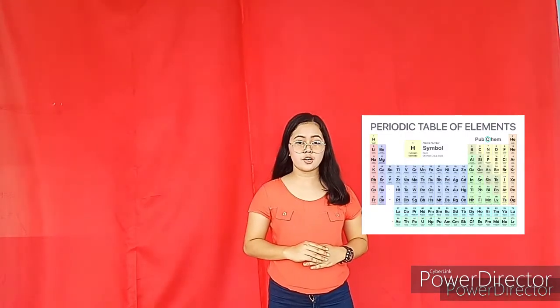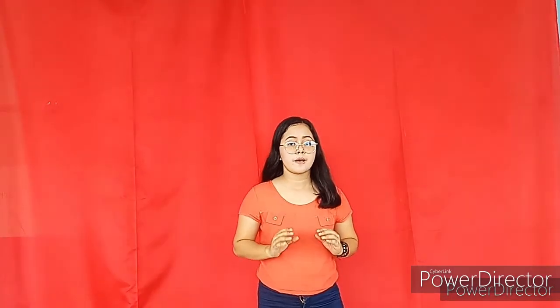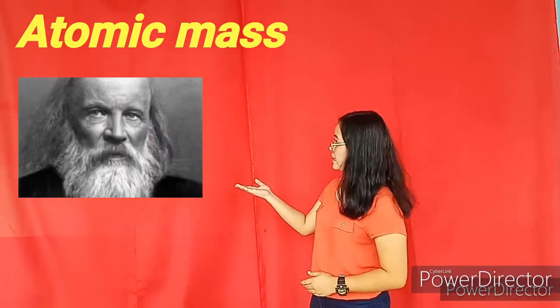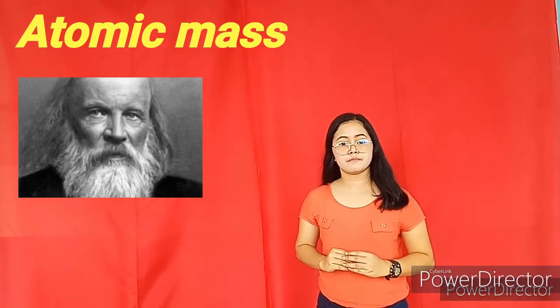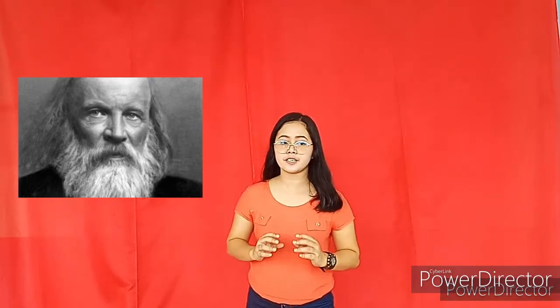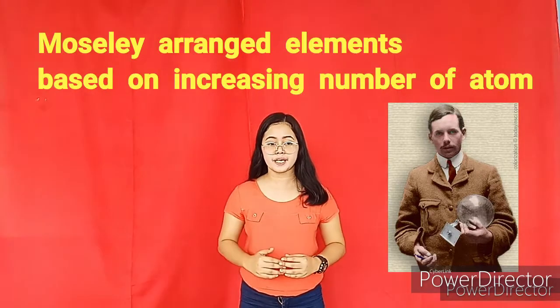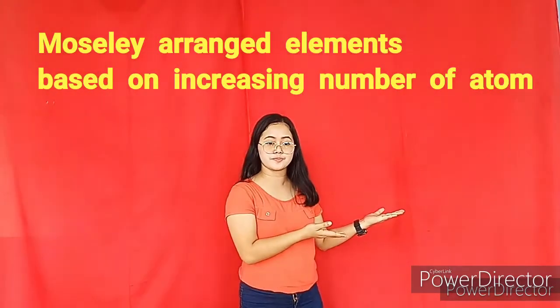We all know that the periodic table of elements was arranged based on atomic mass according to the method of Mendeleev. And it is different from Moseley's periodic table of elements because Moseley arranged elements based on the increasing atomic number.